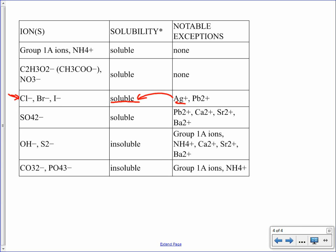Insoluble means it doesn't dissolve. If it doesn't dissolve, it will form a precipitate. It's that simple: if it's soluble in water it's going to be aqueous; if it's insoluble it's going to be a precipitate. The reaction is not going to happen unless it makes an insoluble compound — it's got to make a compound that won't dissolve in order for the precipitation reaction to happen.